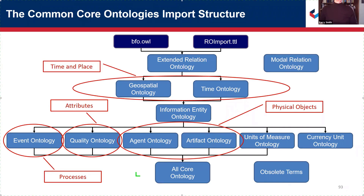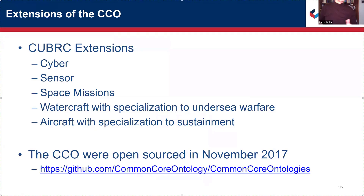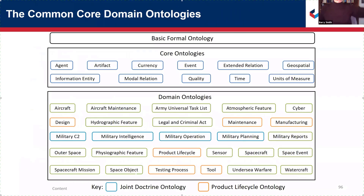You can see how they're divided: time and place, attributes, physical objects, processes. There are many different users of the common core ontologies — the cyber and sensor domains, the space mission domains — so there is a tilt in the direction of what might be interesting from the point of view of the military. But the common core ontologies themselves are all free and open source. Domain ontologies for things like military planning are not quite so freely available as the common core ontologies at the top.